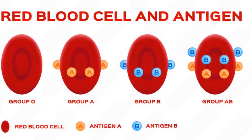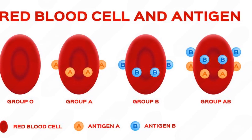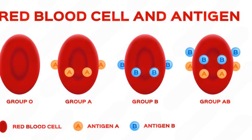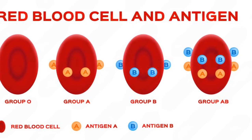Number 1. What are blood groups? Blood groups are classifications of blood based on the presence or absence of specific antigens on red blood cells, RBCs. The most common systems are the ABO system and the RH factor.